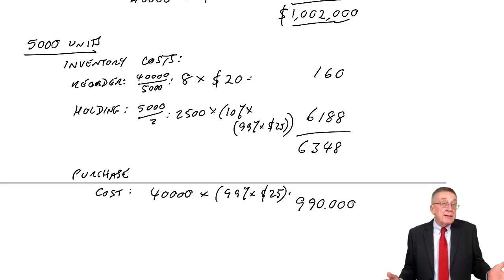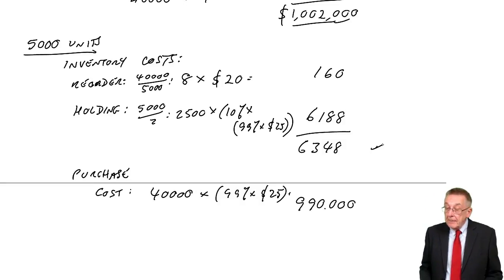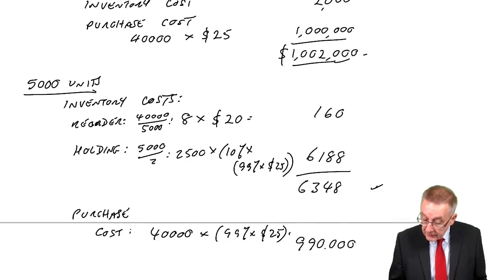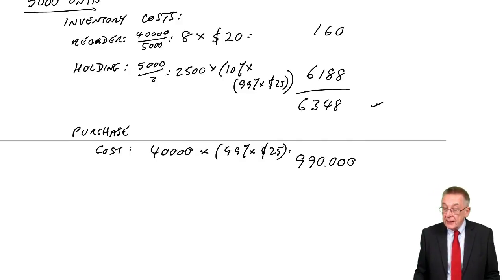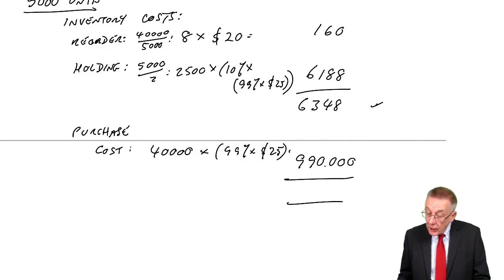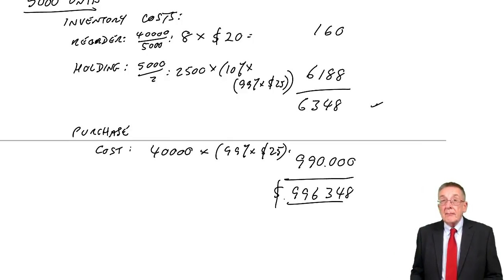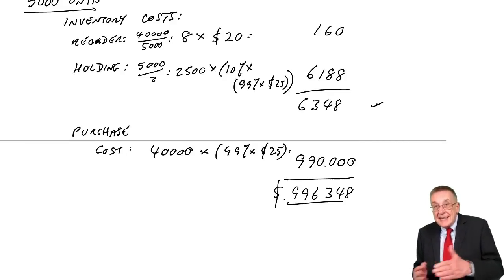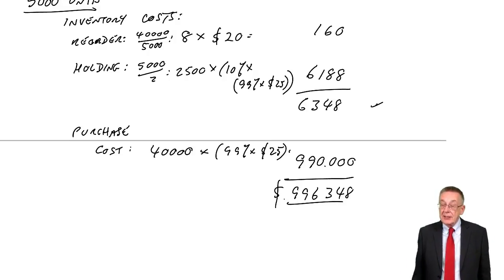But although the inventory costs have gone up a lot from 2,000 to 6,348, the total purchase price has gone down a lot, from 1,000,000 down to 990,000. And so the total is 996,348. It would be better to order 5,000 units. The discount is bigger than the extra inventory costs.